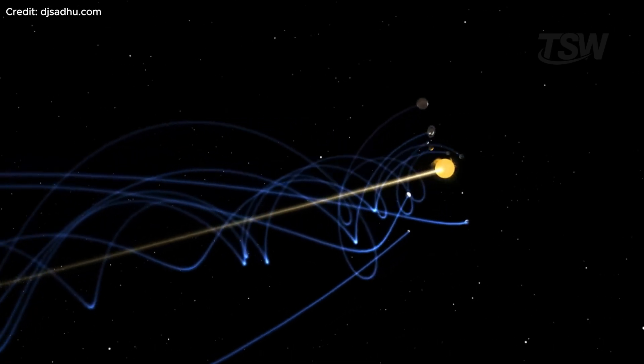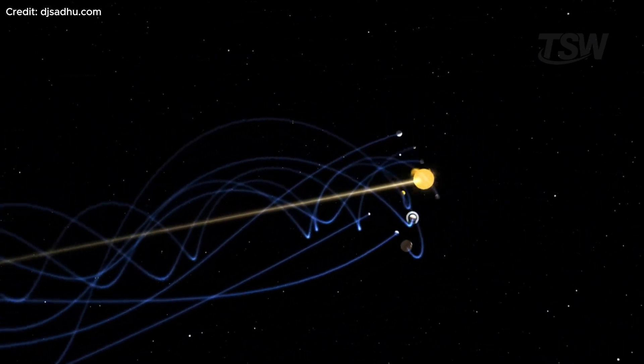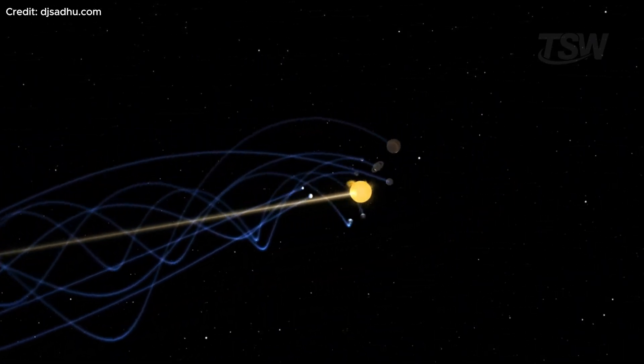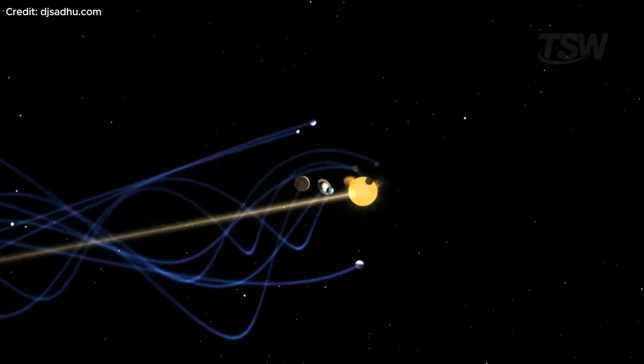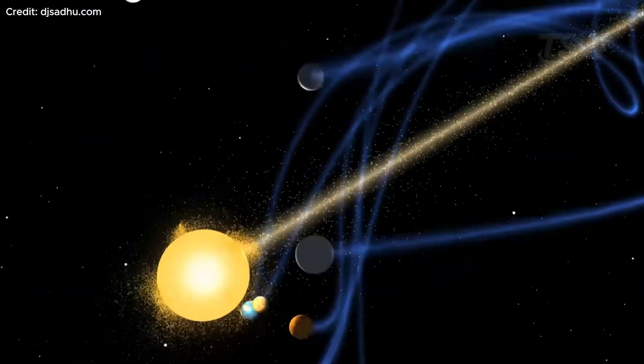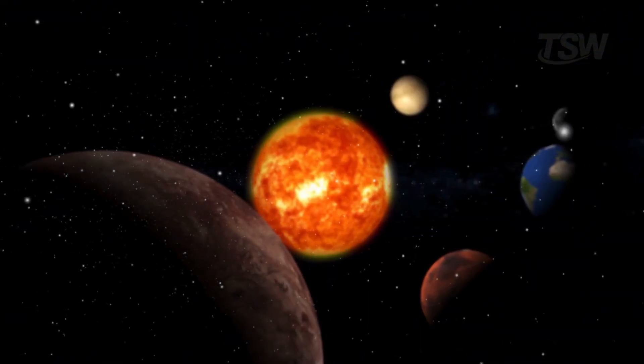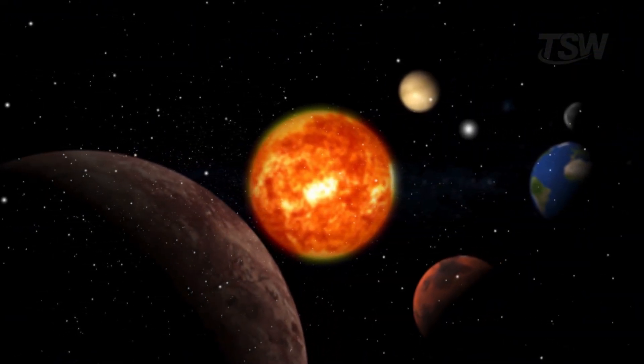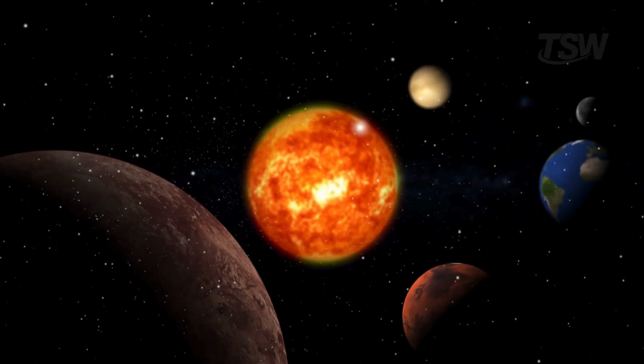Imagine you're holding a rope wrapped around a stick. Now move that stick forward. What happens to the rope? It forms a spiral, and that's exactly how the solar system behaves. Each planet traces a different path, but they all follow the sun in a formation that looks like a luminous helix.